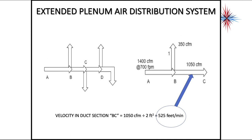Velocity in the duct section B to C, here is 1,050 CFM divided by 2 square feet. So we know our velocity here is 525 feet per minute, because we've lost the 350 here. We're still talking about the same one we had previously.